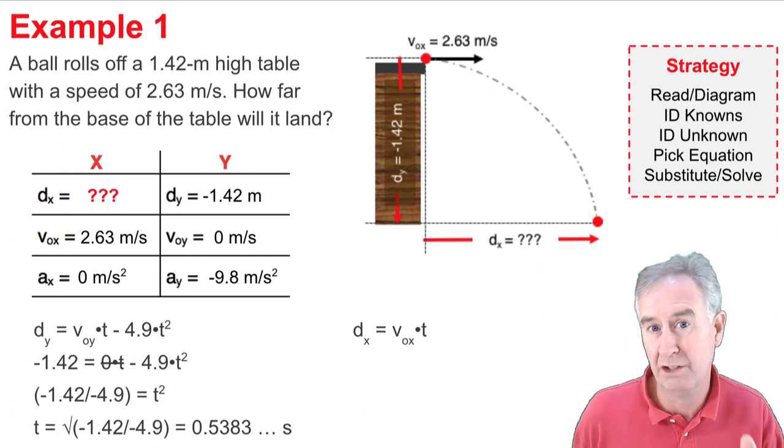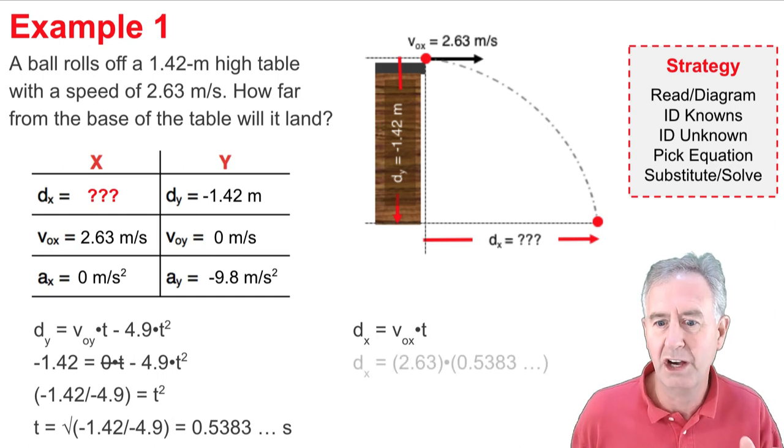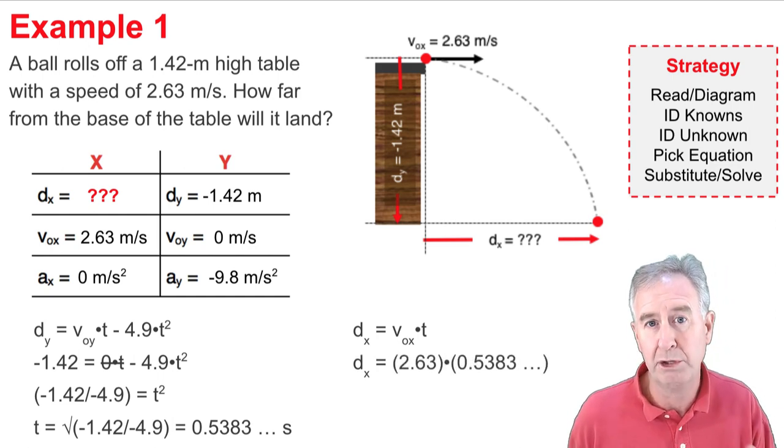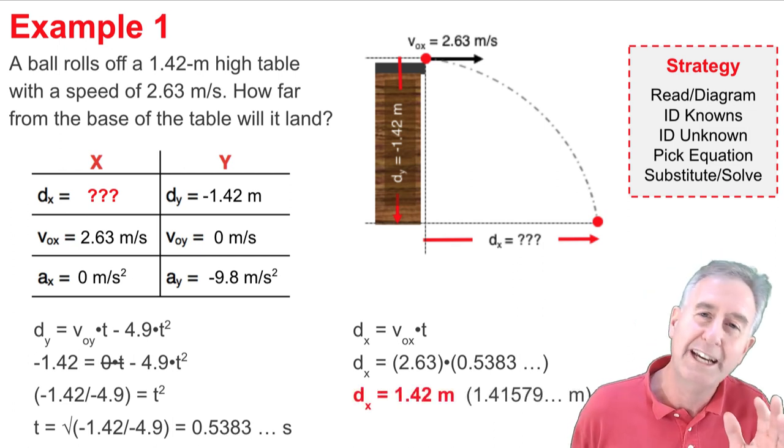So, dx equal vox times t, and vox is given to me as 2.63, and I just calculated the time. So, I'm going to take the number on my calculator, the time, and I'm going to multiply by 2.63, and I solve for dx.